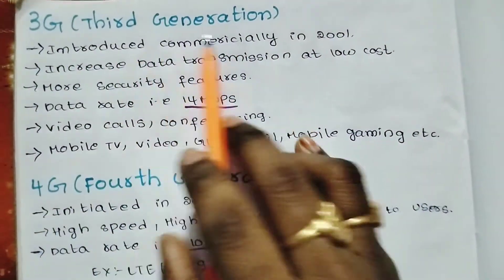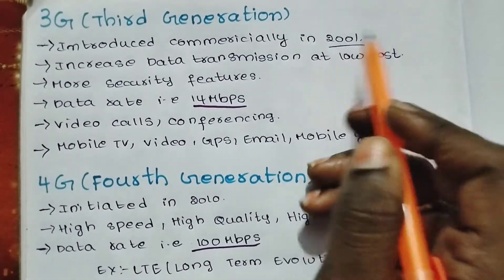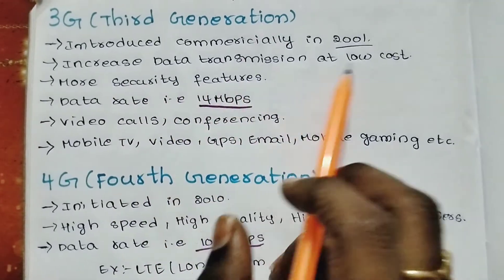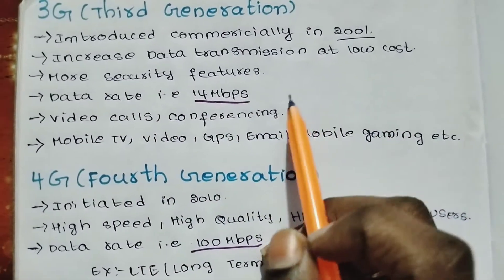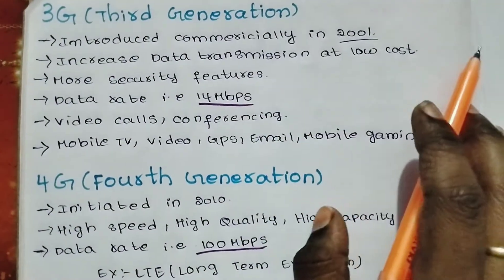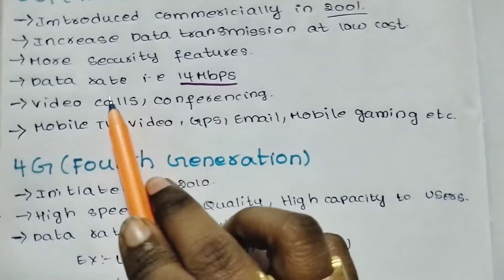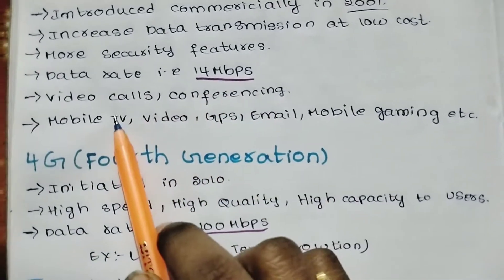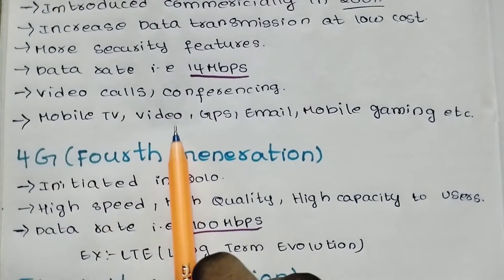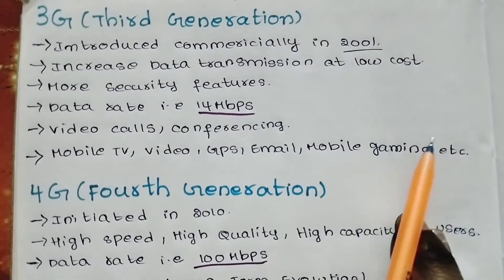Now we will see the third generation, 3G. It was commercially introduced in 2001. It provided increased data transmission at low cost. The data rate is more than 14 Mbps. More security features were added, along with video calls, conferencing, mobile TV, video, GPS, email, and mobile gaming.